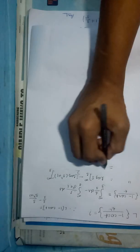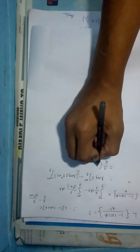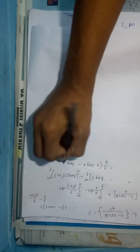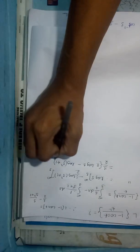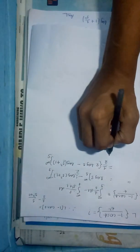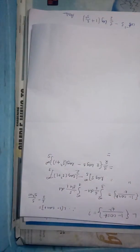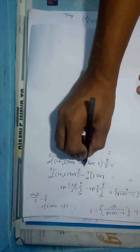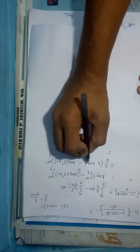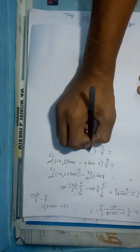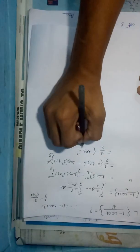Now taking 1/2 common, we get 2 log s minus log(s² + 1), with limit s to infinity. By the property of logarithms, 2 log s becomes log s², so we have log s² minus log(s² + 1), with limit s to infinity.